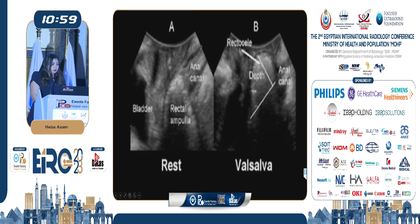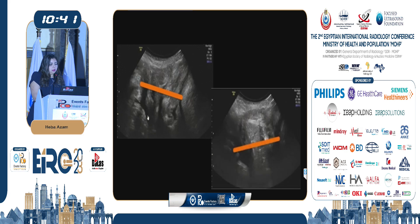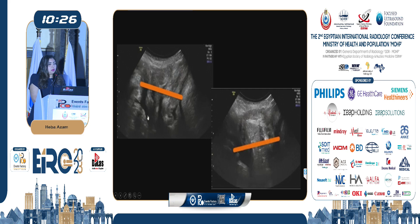In this case, the resting image shows the anal canal and rectal ampulla. During straining, there is bulging of the anterior rectal wall into the posterior vagina, forming a rectocele, and we can measure the depth of the rectocele. In another case, during straining there is bulging of small bowel loops between the rectum and vagina, indicating an enterocele.